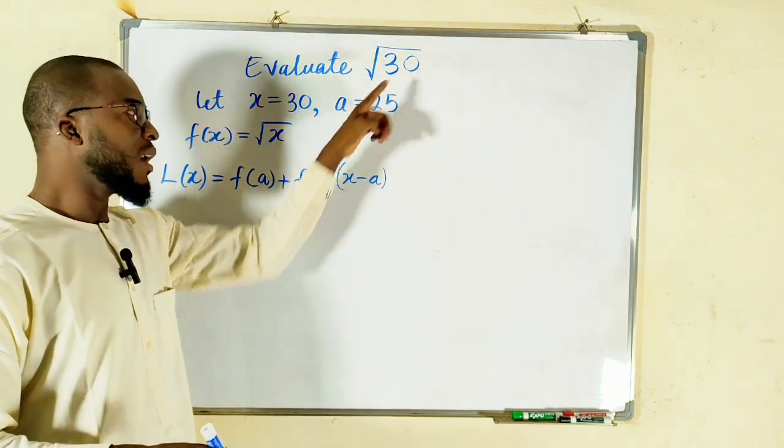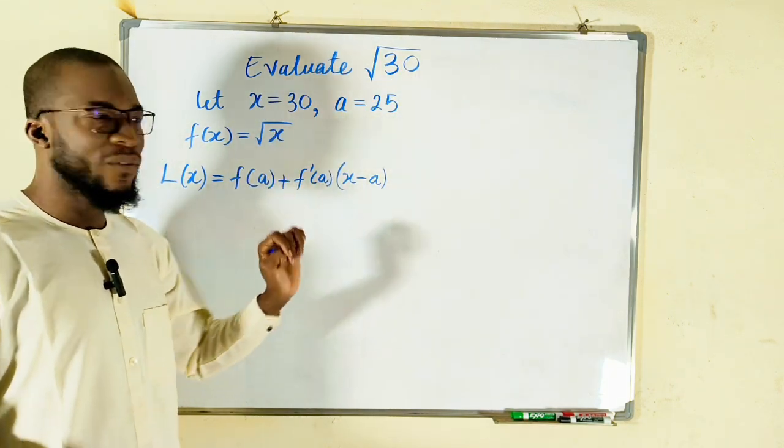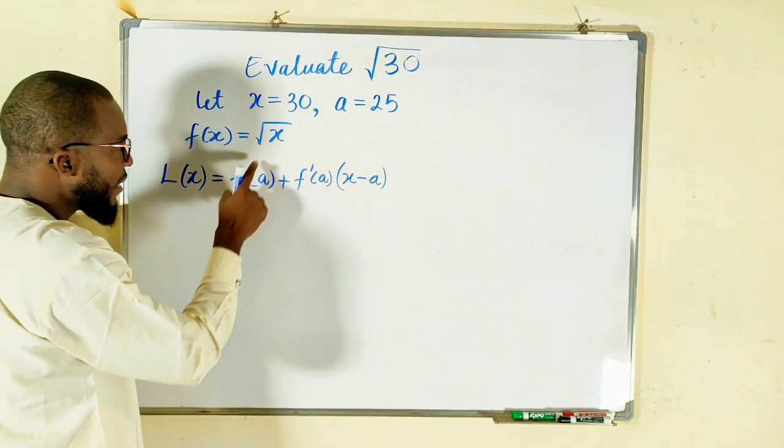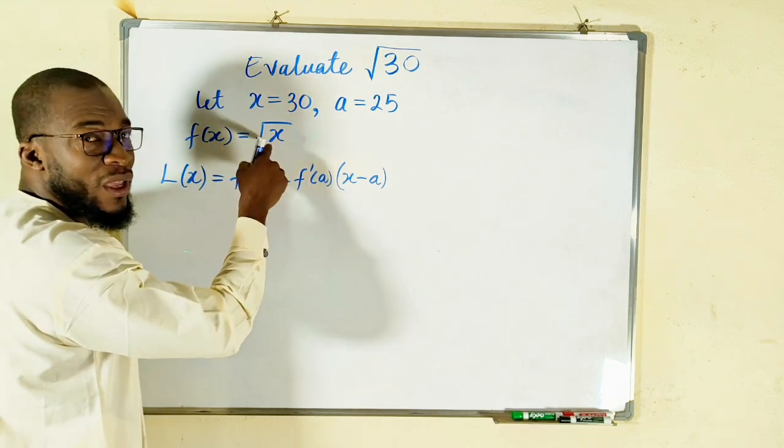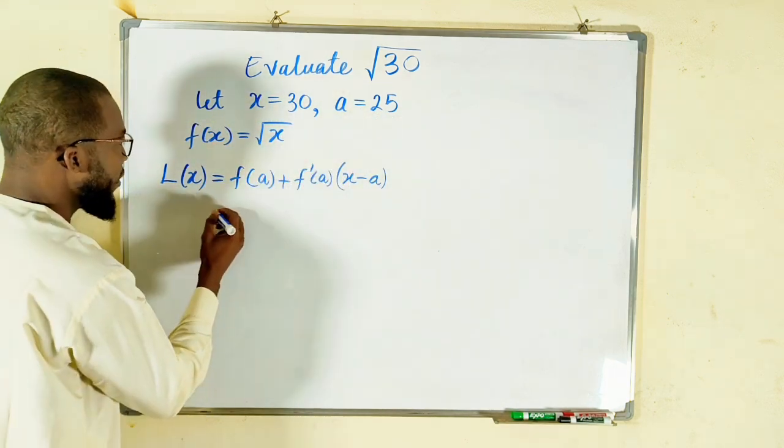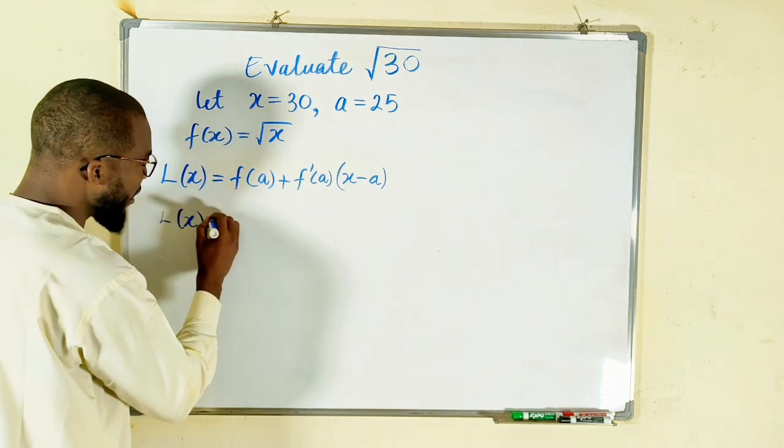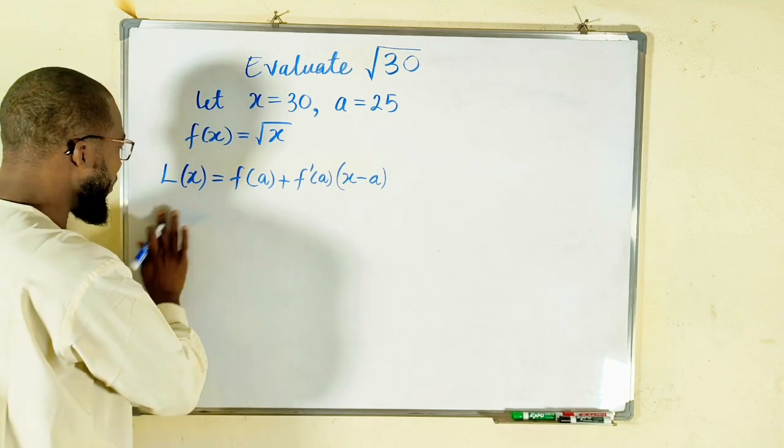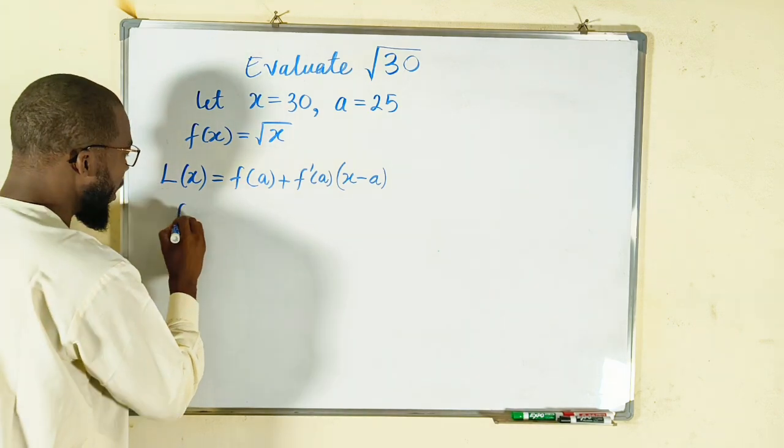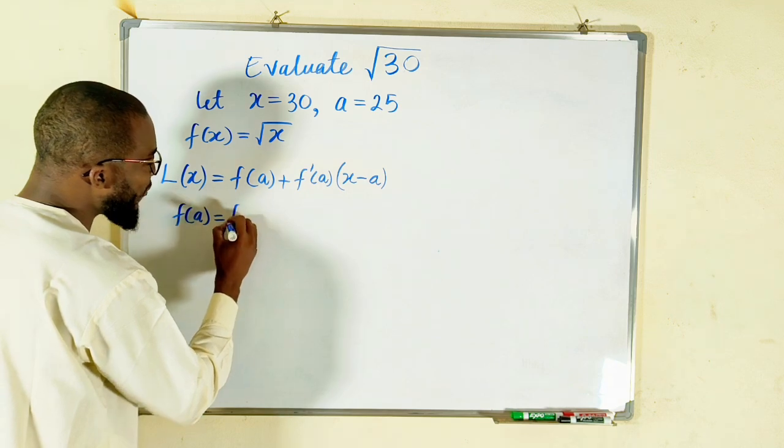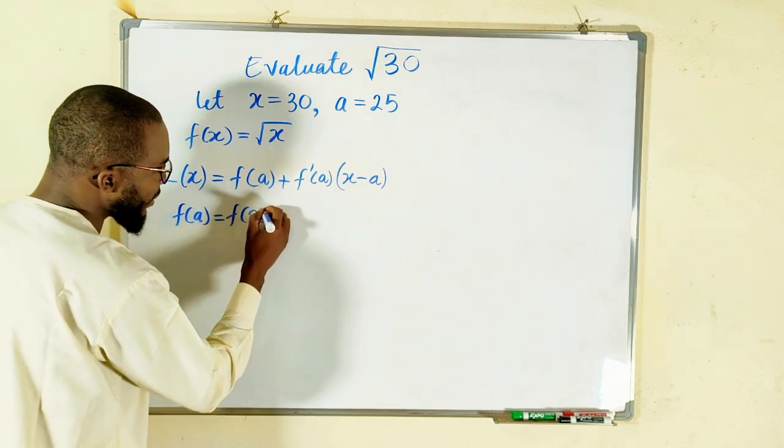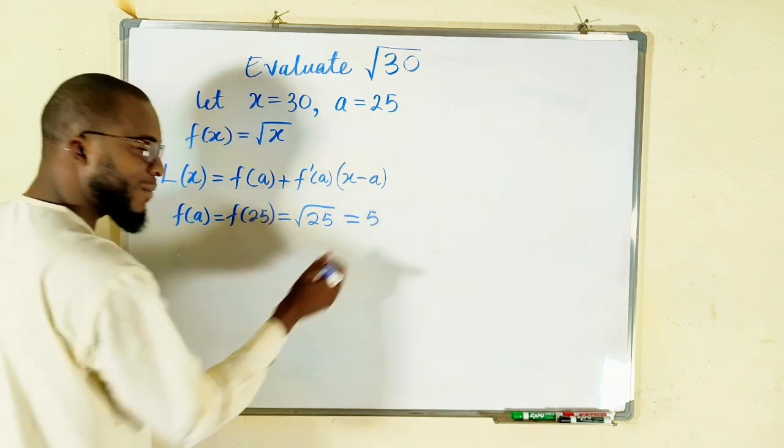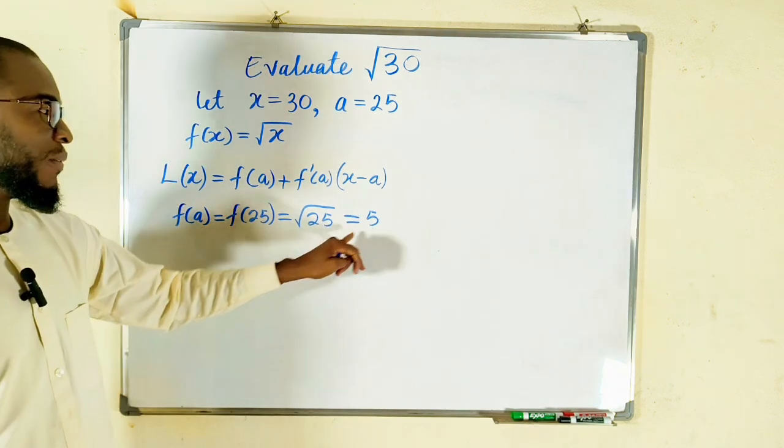We know what is x, it's 30. We know what is a, it's 25. So what is f(a)? If f(x) is this, therefore f(a) will be square root of a, and a is 25. Let's evaluate this separately. f(a) is equal to f(25), which is equal to the square root of 25, which is equal to 5. Because the square root of 25 is 5.